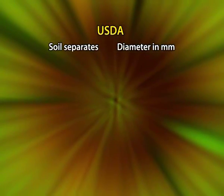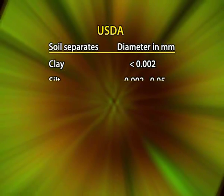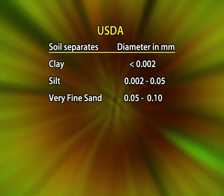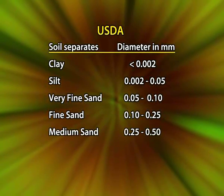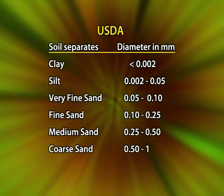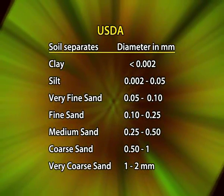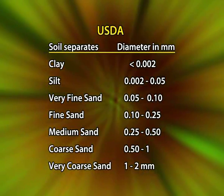According to USDA or the American system, different soil separates have the following dimensions: clay less than 0.002 mm, silt 0.002 to 0.05 mm, very fine sand 0.05 to 0.1 mm, fine sand 0.10 to 0.25 mm, medium sand 0.25 to 0.5 mm, coarse sand 0.5 to 1 mm, and very coarse sand 1 to 2 mm diameter.